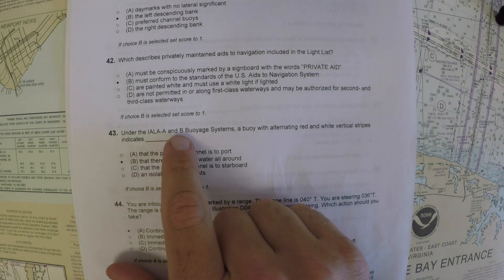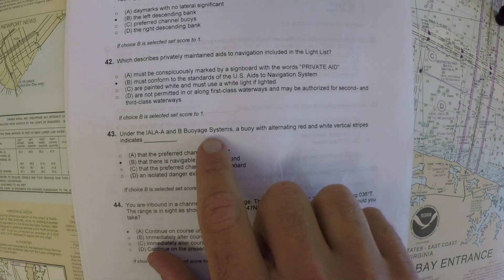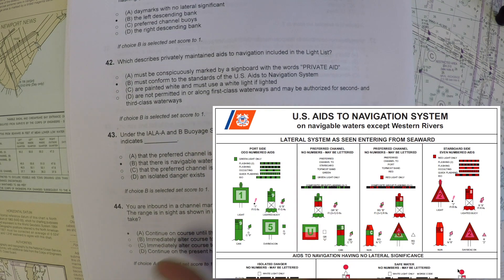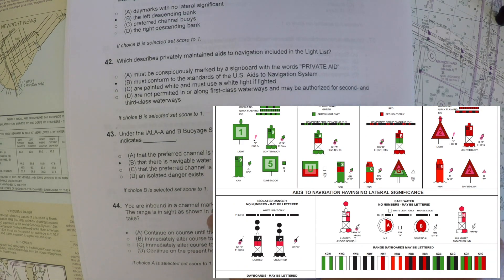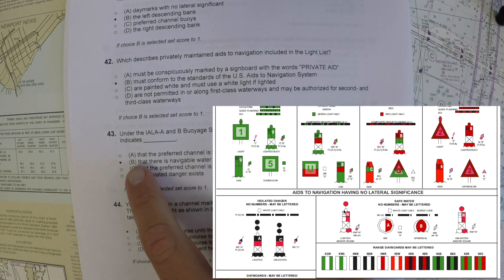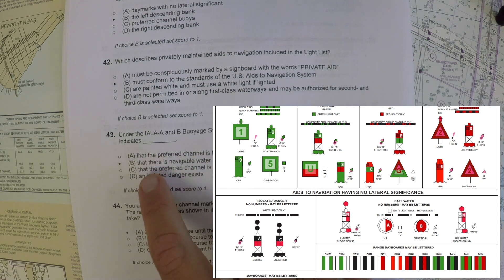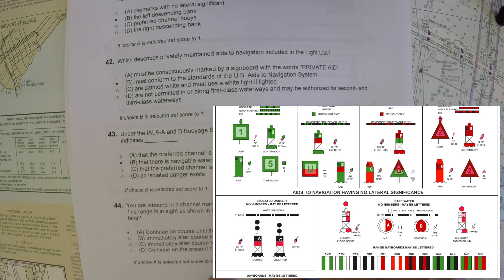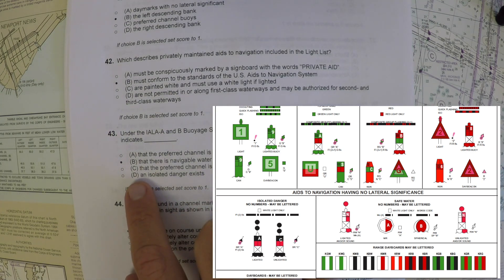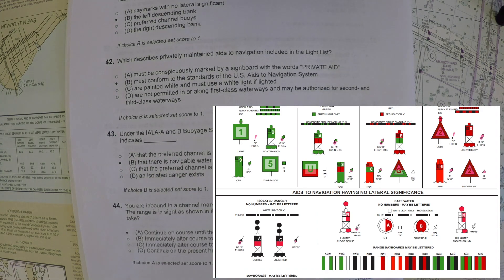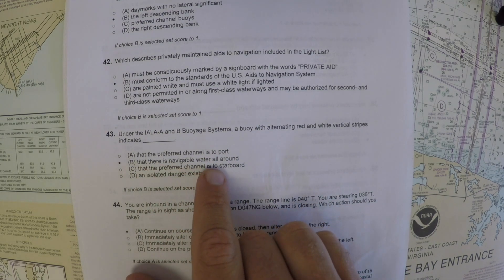Under the IALA A and B buoyage system — IALA stands for the International Association of Lighted Aids — a buoy with alternating red and white vertical stripes indicates what? When you see red and white vertical stripes, that's the sea buoy, or Morse Alpha buoy, also called the Safe Water buoy. It indicates that there is navigable water all around. The preferred channel buoys are red and green with horizontal stripes, not red and white. An isolated danger buoy uses black and red to indicate a specific danger. So alternating red and white vertical stripes means Safe Water — navigable water all around.